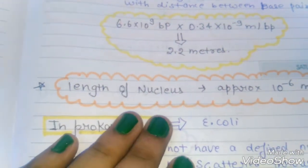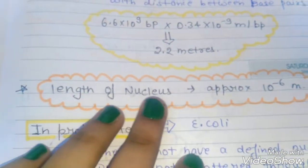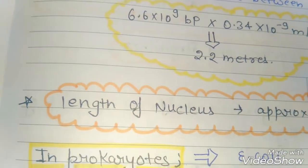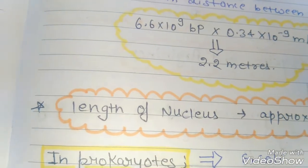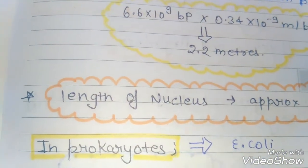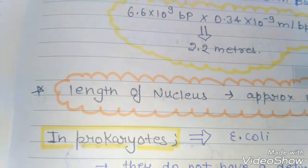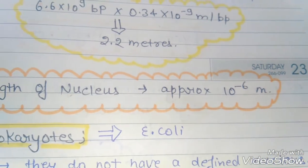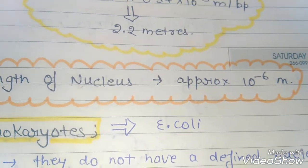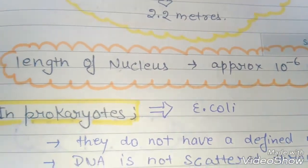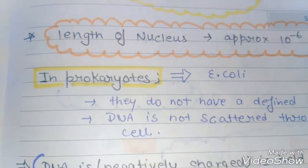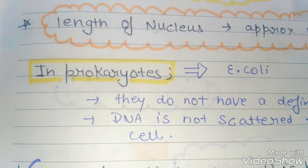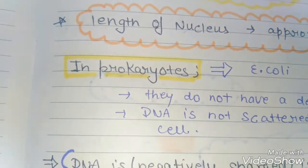Next we will talk about the length of the nucleus. The length of the mammalian nucleus is approximately 10⁻⁶ meter. Now we will talk about the packaging of DNA in prokaryotes.